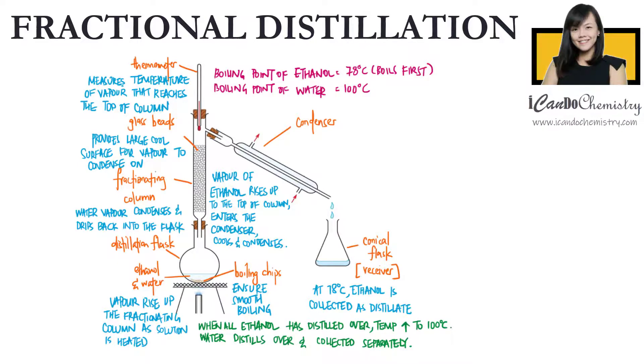Now let's focus on the condenser. The temperature in the condenser is much lower. The hot vapour that reaches the top of the fractionating column will cool down in the condenser and condenses back into liquid. Pure liquid is collected as a distillate in the receiver.